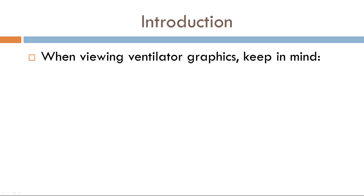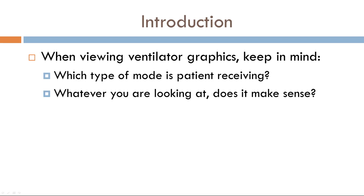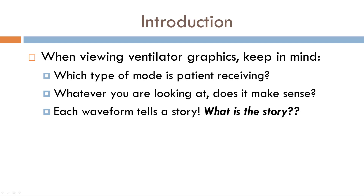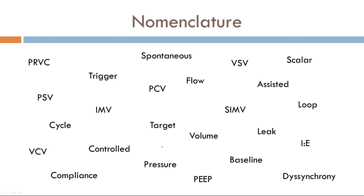Here's the first set of rules. When viewing the graphics, a few things to keep in mind. First, which type of mode is the patient receiving? Second, does what you're looking at actually make sense? Third, each waveform tells a story — every time you see a ventilator waveform, you should be able to understand what's going on in the lung. There's a lot of nomenclature when dealing with mechanical ventilators; it's almost like a language in itself. Some terms are maybe misused, so we're going to provide definitions for all the terms so we're all on the same page.